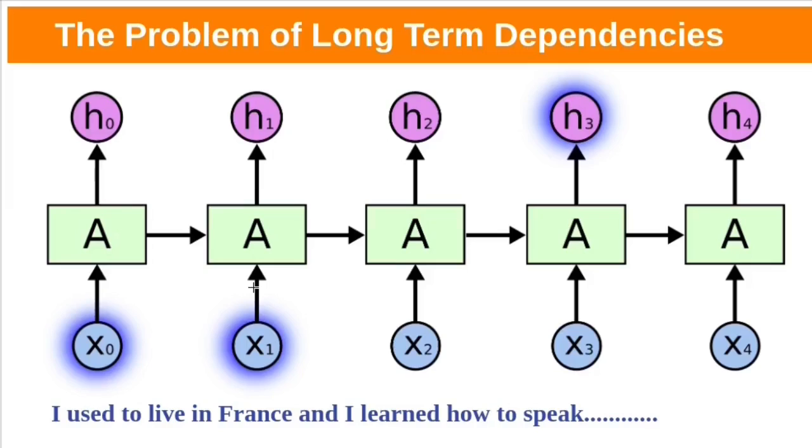Sometimes we only need to look at recent information to perform present task. For example, if we are trying to predict the last word in this sentence, I used to live in France and I learned how to speak, we need to predict this word here.